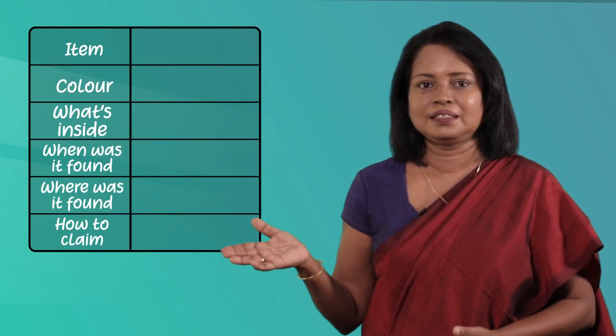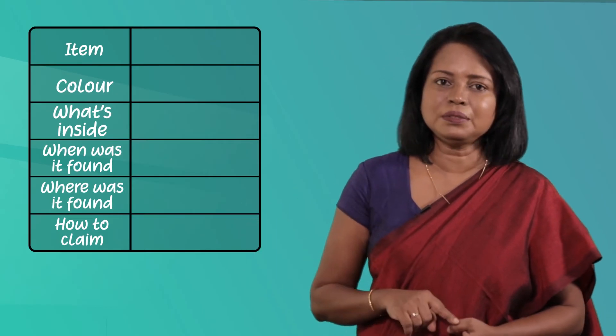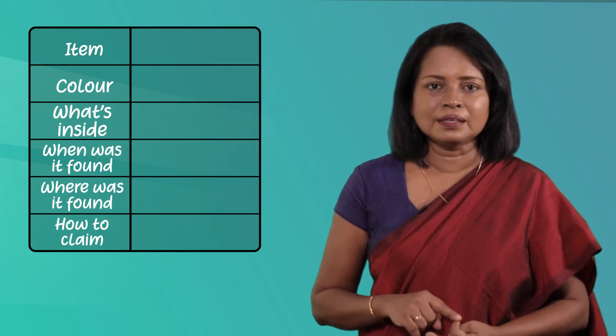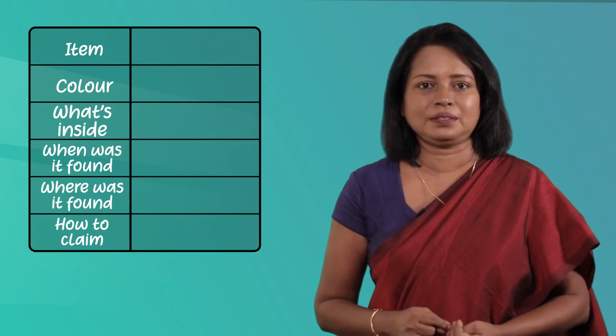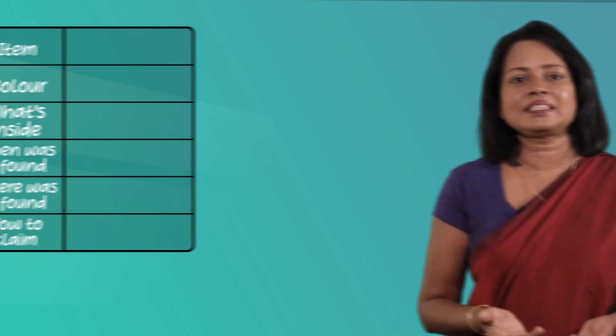Now that you have read one notice, let's read another. Although the earlier one is about a lost item, this one is written by someone who has found something. What you have to do is read this notice and find the information to fill in this grid. You have to write what the item is, the colour, when and where it was found, and also how to claim it. Let's start the activity.